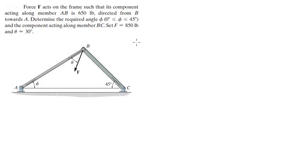Alright guys, now we're going to do this problem in which the force F acts on the frame such that its component acting along AB is 650. Determine the angle required, this angle right here from 0 to 45 degrees, and the component acting along the member BC.